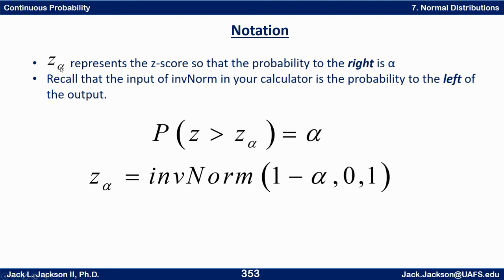So z sub alpha means the probability that z is greater than z_alpha equals alpha, which means the probability that z is less than z_alpha is one minus alpha. Therefore z_alpha equals inverse norm of (1 minus alpha, 0, 1) — it's a z-score from a standard normal distribution. I'll probably most of the time just use the calculator notation for inverse norm, but sometimes the z sub alpha notation is useful and you'll see it as well.